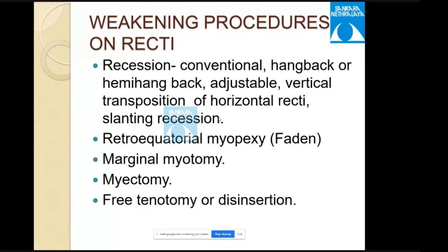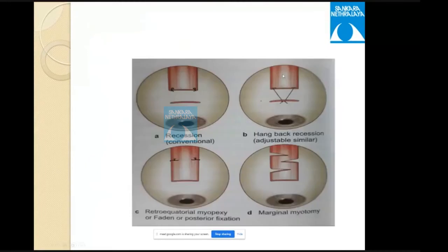Weakening procedures on recti include several types of recession: conventional, hang-back, hemi-hang-back, adjustable, vertical transposition of horizontal recti, and slanting recession. Other weakening procedures include retro-equatorial myopexy (Faden procedure), marginal myotomy, myectomy, free tenotomy, and disinsertion.